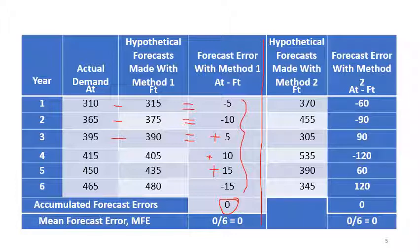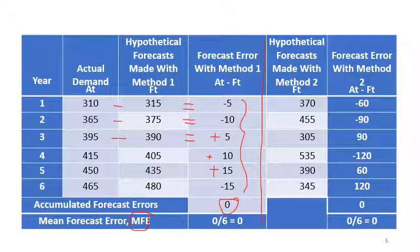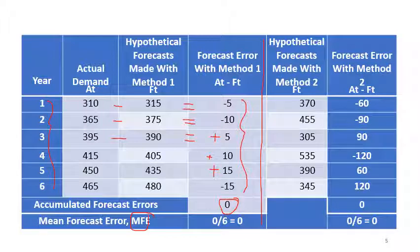This is the disadvantage we were discussing. Minus 10 is a huge difference, minus 5 is also a significant difference, but the accumulated forecast error turns out to be zero because positive and negative errors cancel each other out. So the mean forecast error MFE is the total accumulated forecast error — here 0 — divided by the number of observations, which is 6. Zero divided by 6 equals zero. So the MFE for forecasting method 1 is 0.